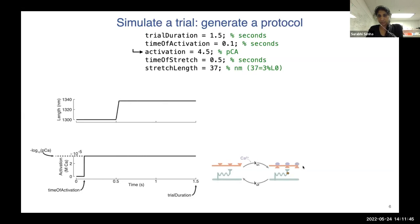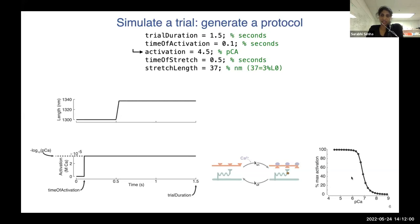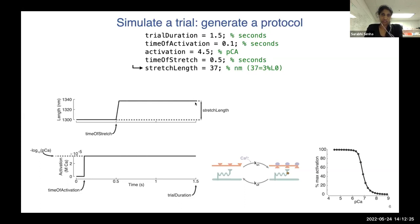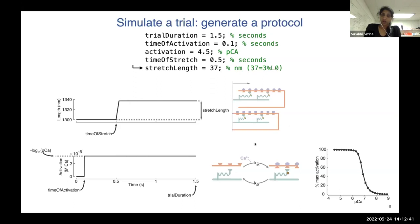The reason we use calcium is because the crossbridge model takes in calcium concentration and uses that to determine the number of actin sites that are available for myosin heads to bind. For those not used to thinking of activation as calcium concentration, we can use an activation curve to quickly convert between pCa and percentage activation. Once we have the activation, the next line of code specifies the time when the stretch begins, the beginning of the stretch, and the total length of the stretch — in nanometers, since for this tutorial I've simplified the muscle into a sarcomere.